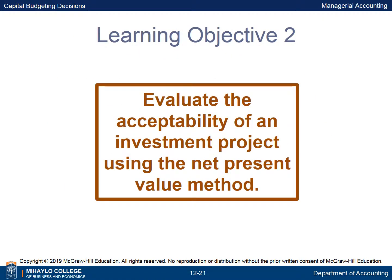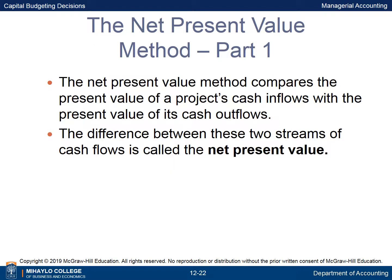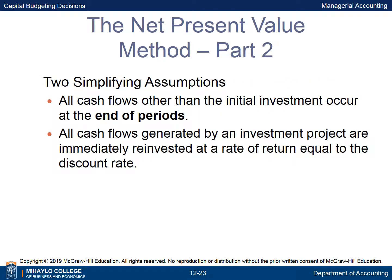Learning Objective 2 is to evaluate the acceptability of an investment project using the net present value method. The net present value method compares the present value of a project's cash inflows with the present value of its cash outflows. The difference is called the net present value. Two simplifying assumptions are: all cash flows other than the initial investment occur at the end of periods, and all cash flows are immediately reinvested at the discount rate.